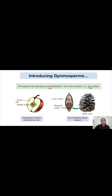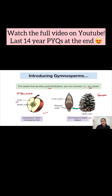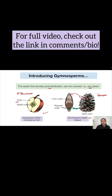Now let us look at the gymnosperm seeds. This is a cone of gymnosperms. In angiosperms, flowers are present — the sporophylls arrange themselves into flowers — but in gymnosperms, the sporophylls arrange themselves into cones. If we take out one of these sporophylls from this cone and look at it...